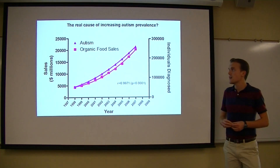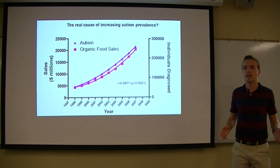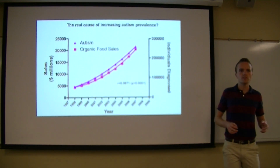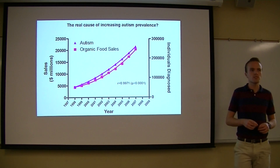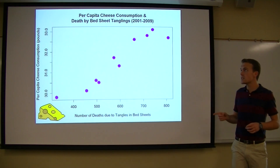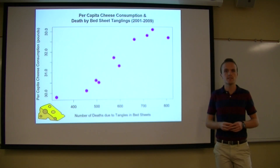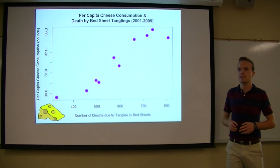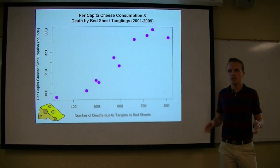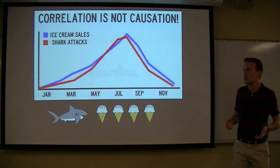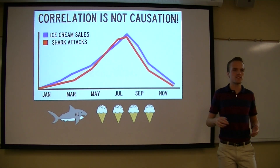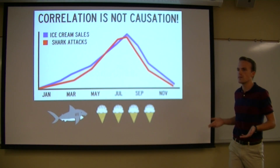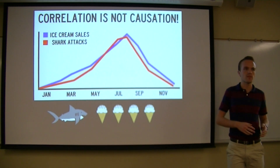Look at this chart, for example. This shows a strong correlation between autism and organic food sales. Does this mean that organic food causes autism? The graph sure seems to suggest this, but if you draw that conclusion you also have to conclude that eating cheese causes people to die by being tangled in their bedsheets. Correlation is not the same thing as causation. Ice cream sales do not cause shark attacks — they just both increase at the same time in the summer months when it's warmer. Correlation is not the same thing as causation.